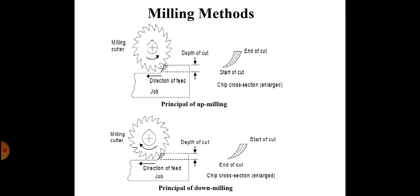In the top figure, it is known as up milling. In up milling, the metal is removed when the work piece feed direction is against the cutter rotation. As clearly shown in the figure, the direction of the cutter is anti-clockwise and the work piece is fed towards the cutting tool.